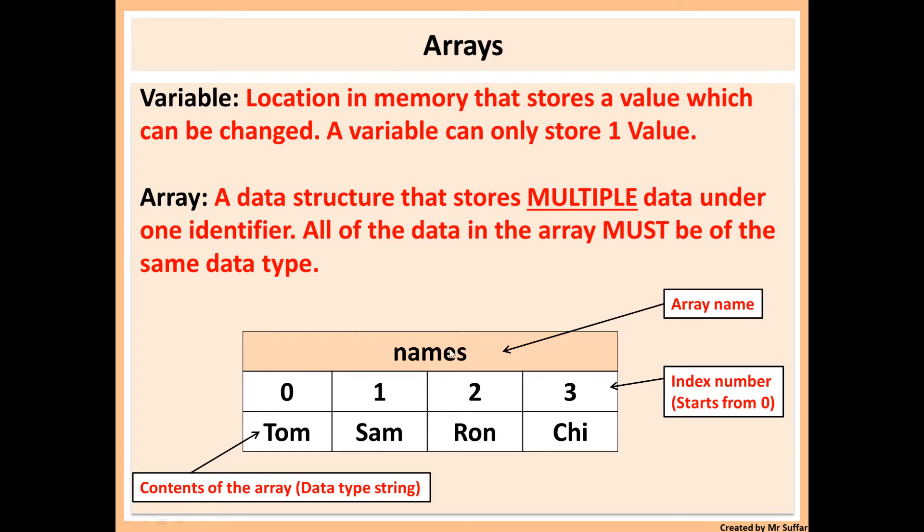You can see here at the bottom we've got a table, this is an array. We've got an array called names and it's storing multiple items. Each item has an index number, so Tom is stored under index number zero. Arrays start with index zero so we can access them later on.